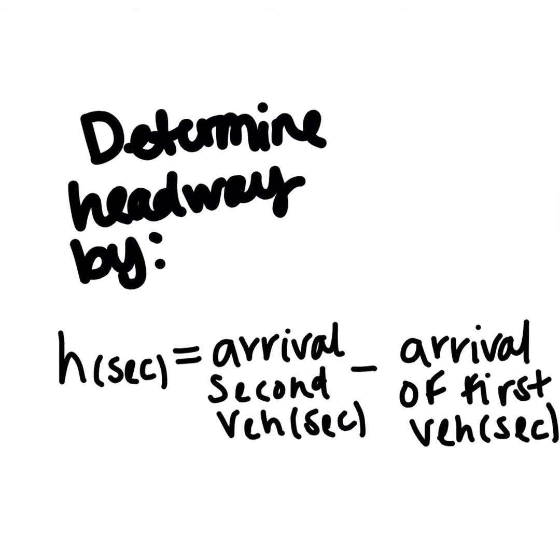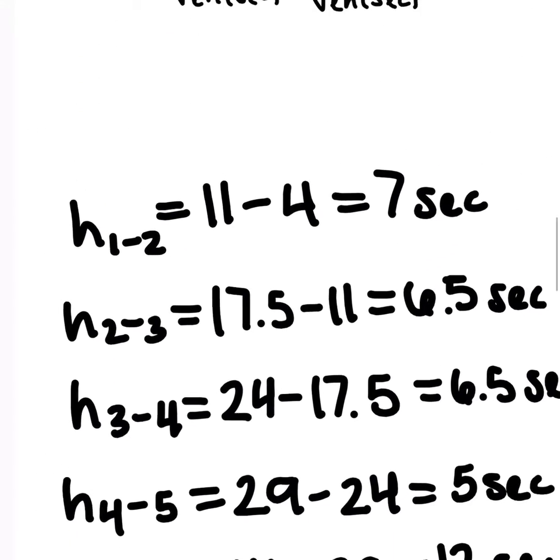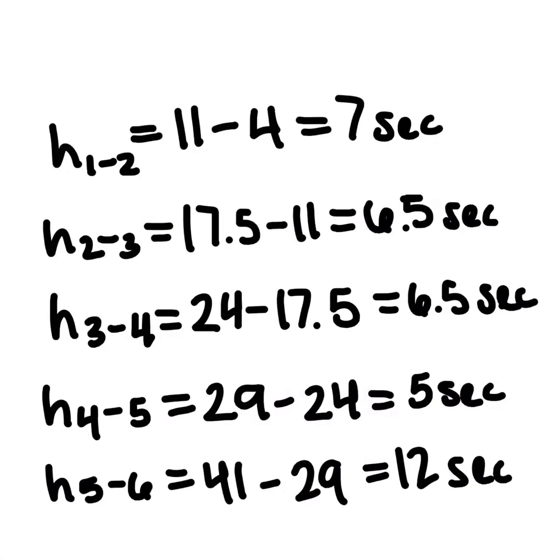To determine headway, we will need to get the difference between the arrival time of the second vehicle minus the arrival time of the first vehicle. We will go ahead and do this for all six vehicles.